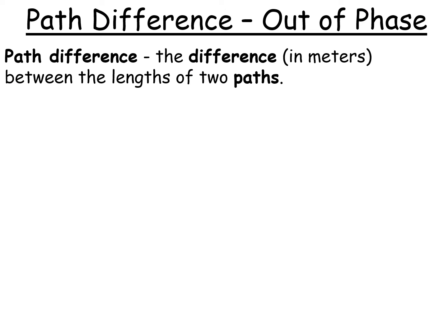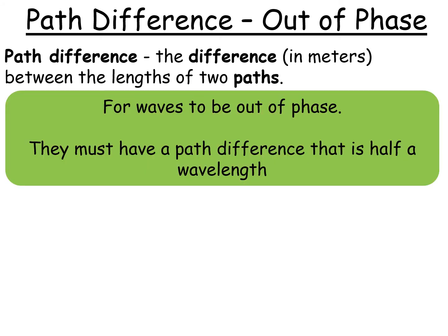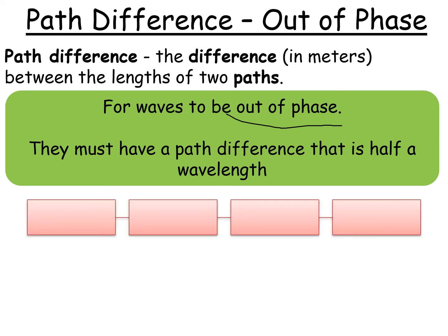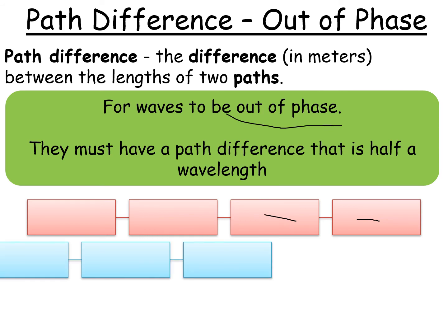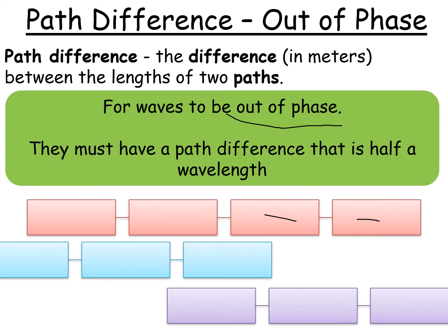Path difference is the difference in metres between the lengths of two paths. For waves out of phase, they must have a path difference that is half a wavelength out — that could be half, one and a half, two and a half, etc. Using the train carriage analogy: if they're half a wavelength out, the carriages line up offset and don't exactly match up, giving you destructive interference.